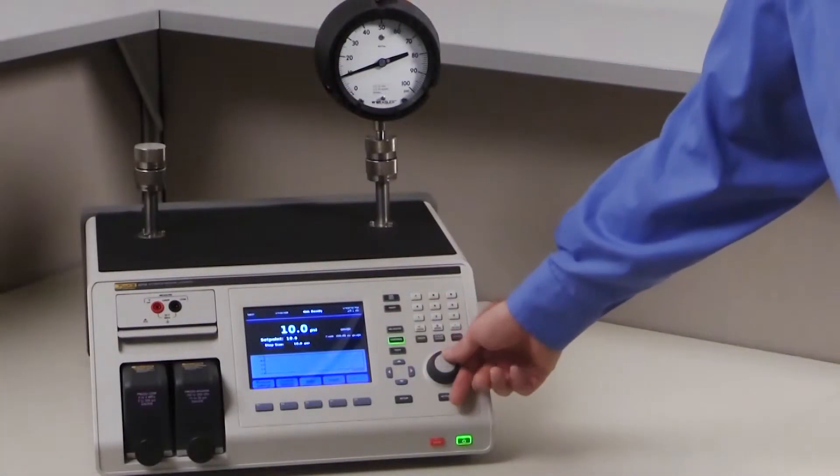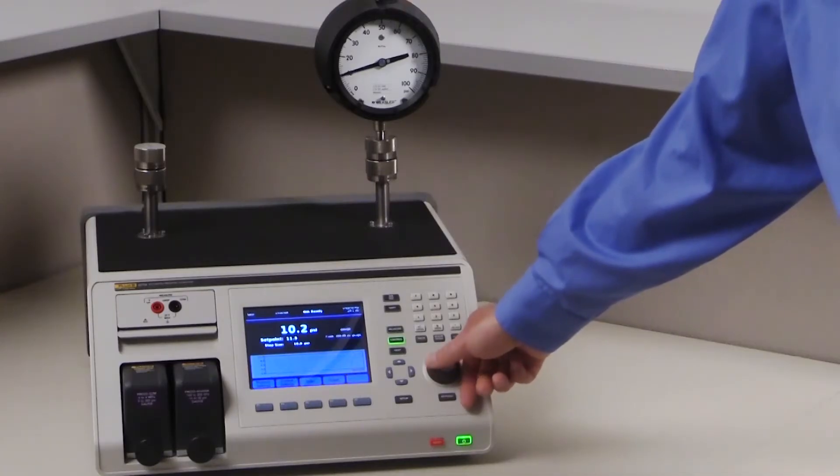When testing an analog gauge, you can easily jog the pressure by using the rotary wheel on the front panel.